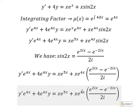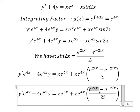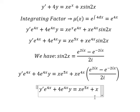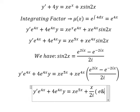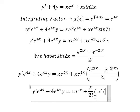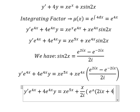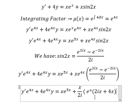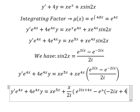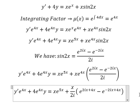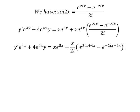Now we multiply this one by this one and this one. I will put 2i in here. Next, we put the integral for both sides.